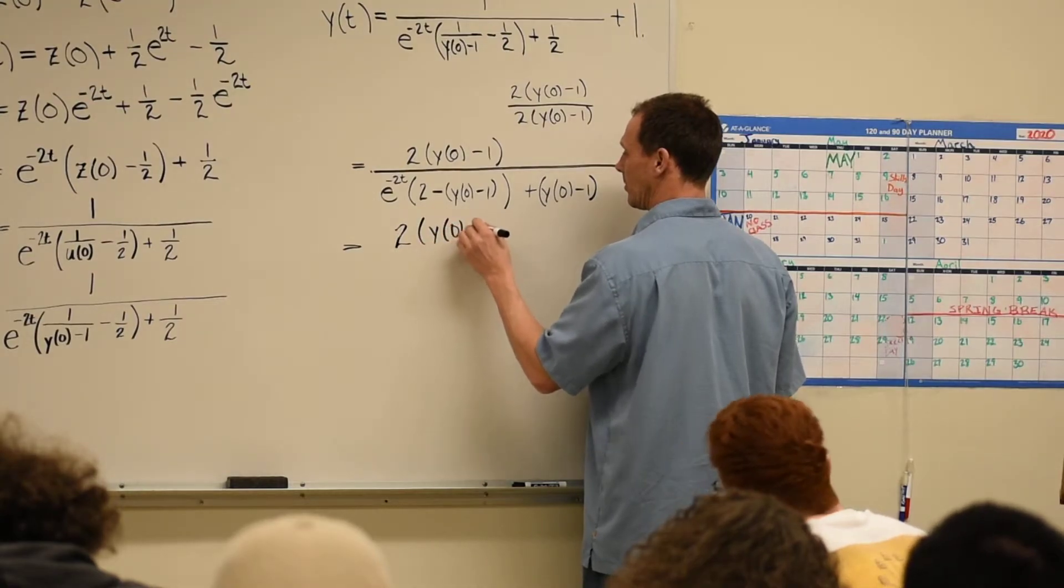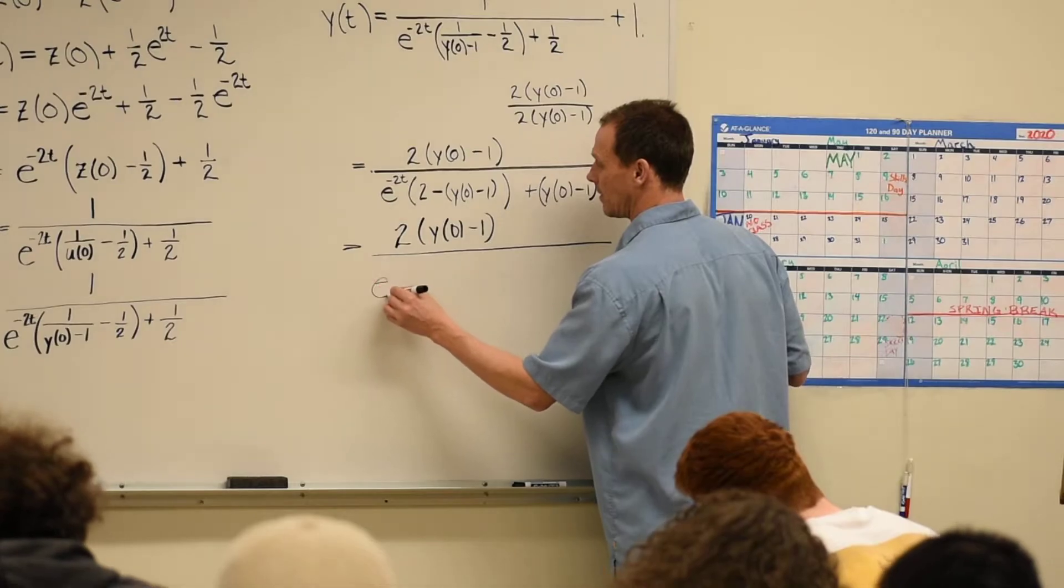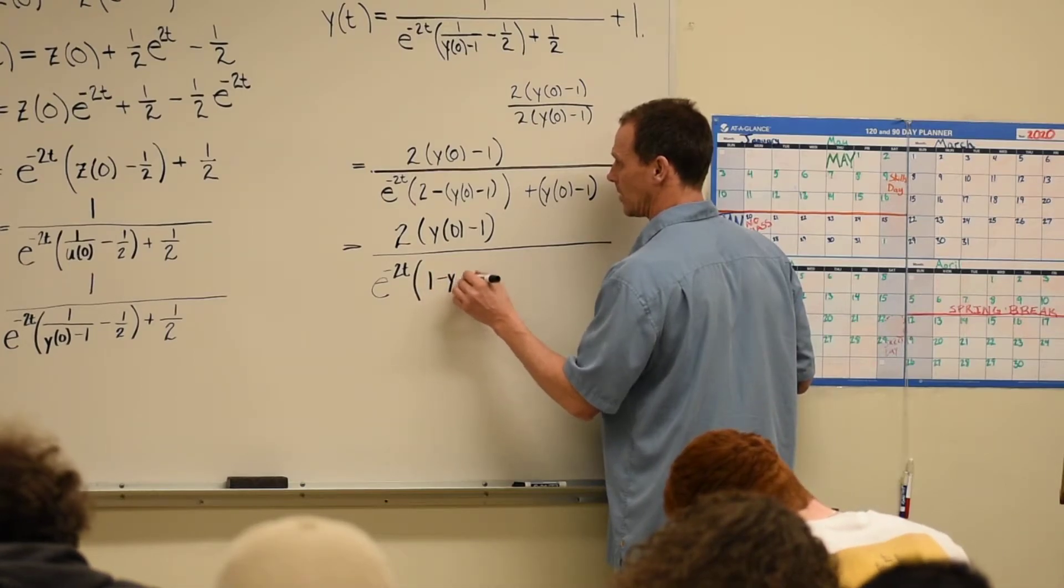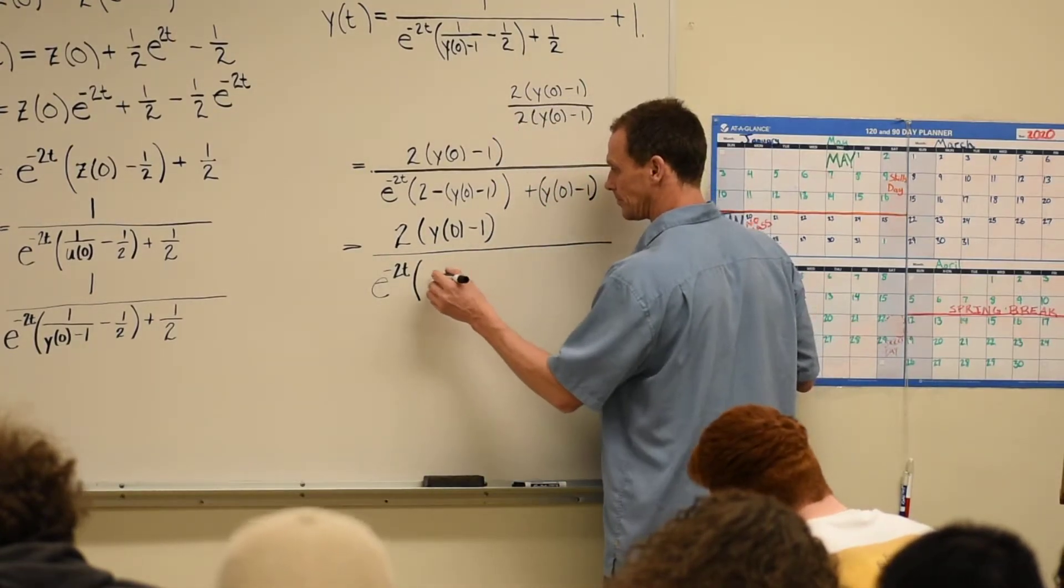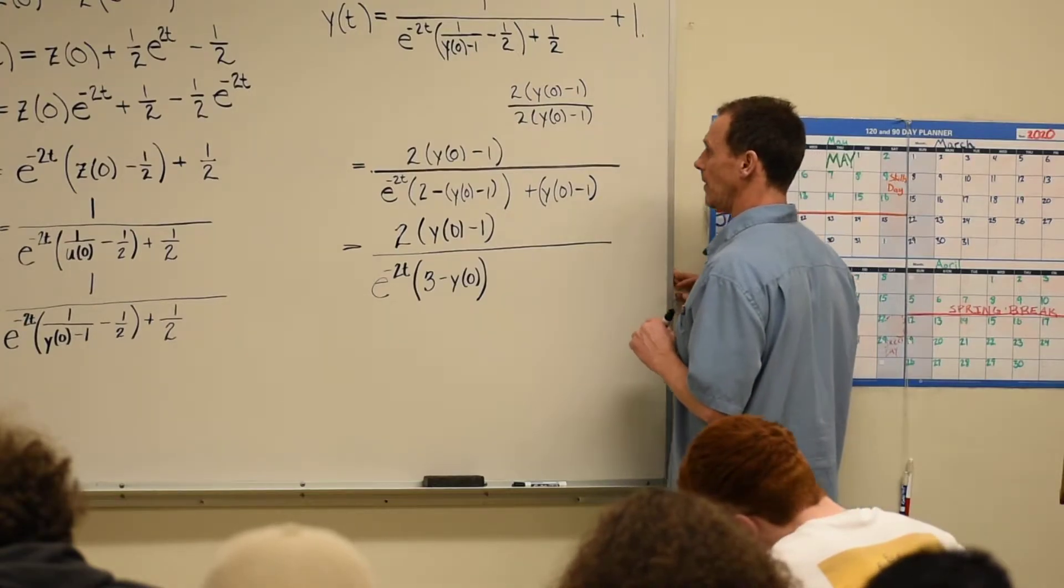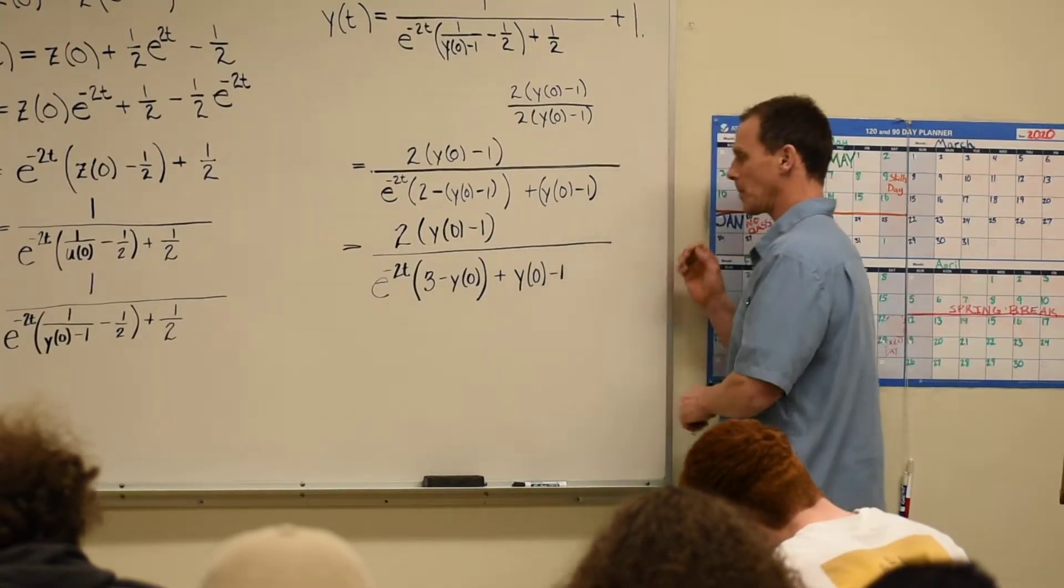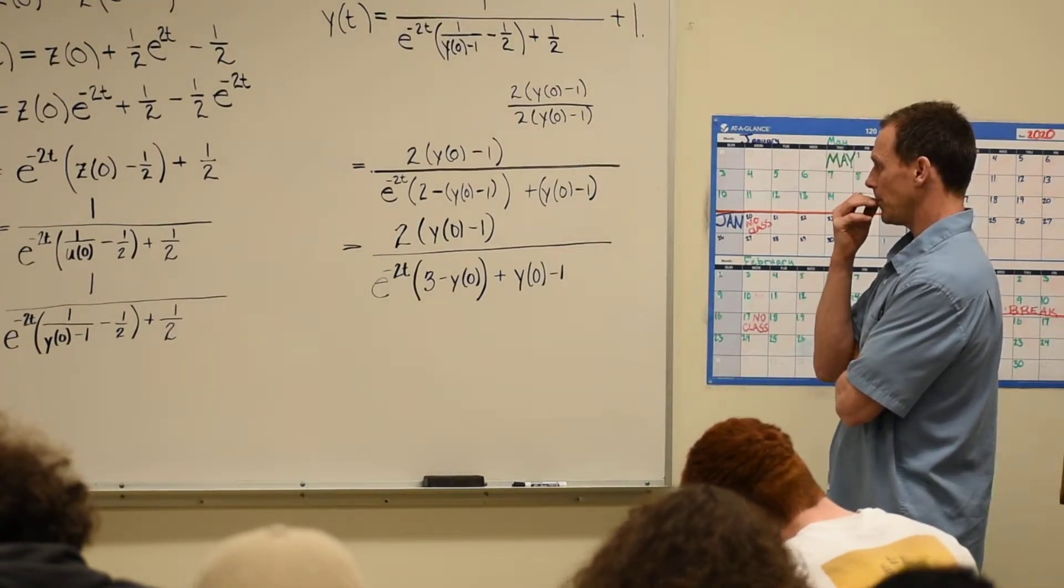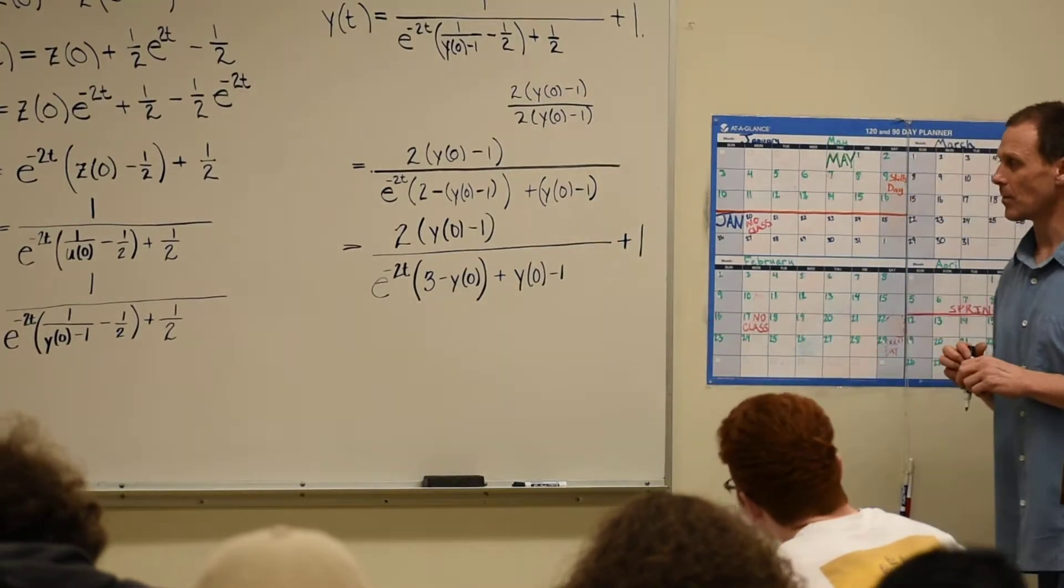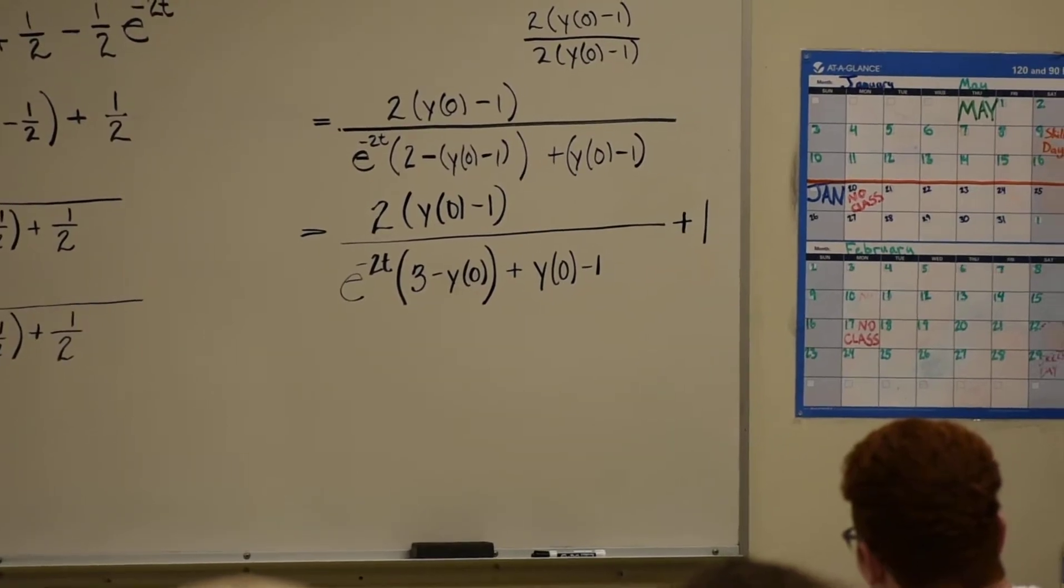Let's see what happens. So, 2 times Y of 0 minus 1 over, E to the minus 2T. I have a 2 minus 1. That's not so bad. That's 1 minus minus 0. Oh, 2 minus plus, sorry, plus. That's 3. Minus the initial condition. And then, plus, and we need that Y of 0. And, oh, there was one. Oh, okay. I see what's happening.